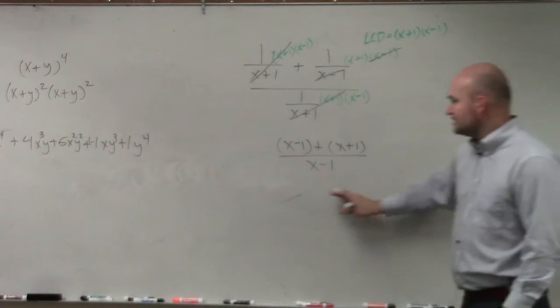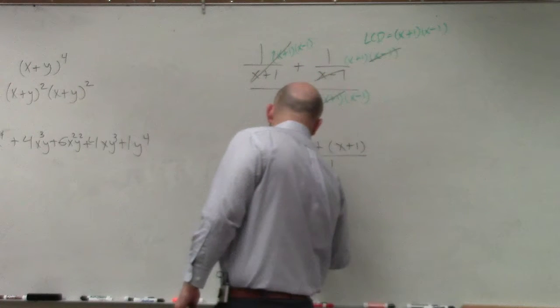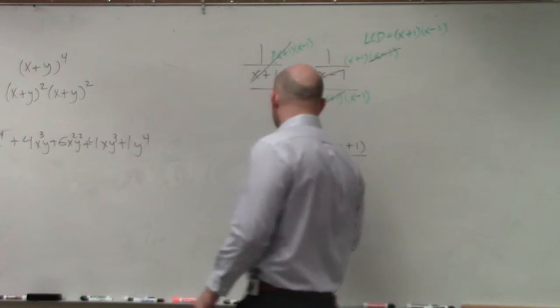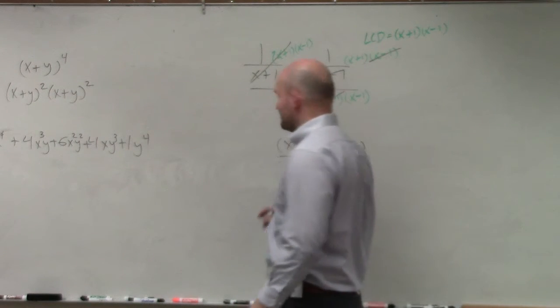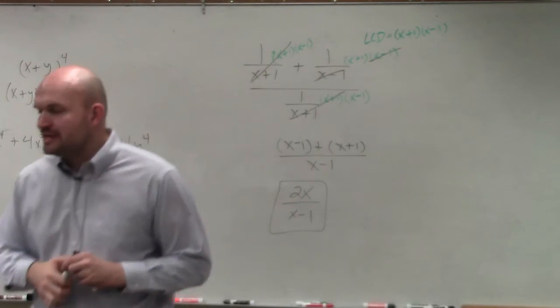Then I just combine like terms, x plus x is 2x, negative 1 plus 1 goes to 0, and then I'm left with 2x divided by x minus 1. And that is what we call our simplified version, okay? That is complex fractions.